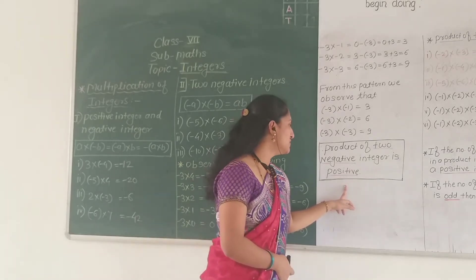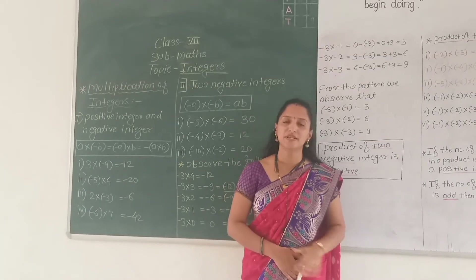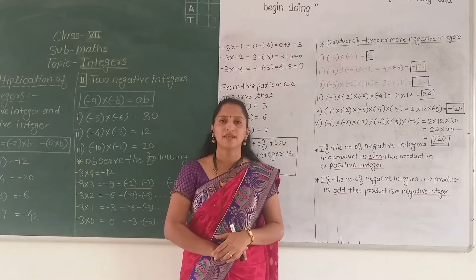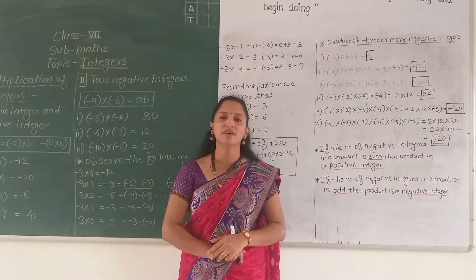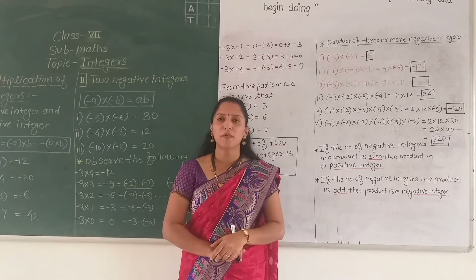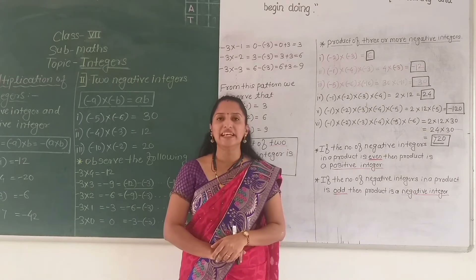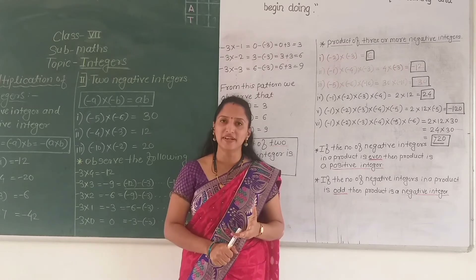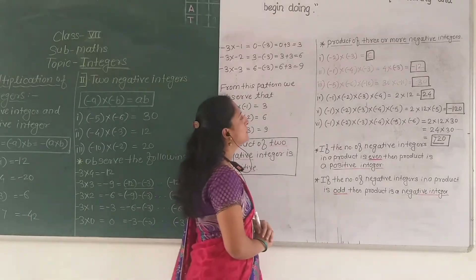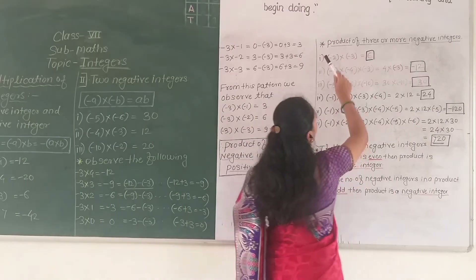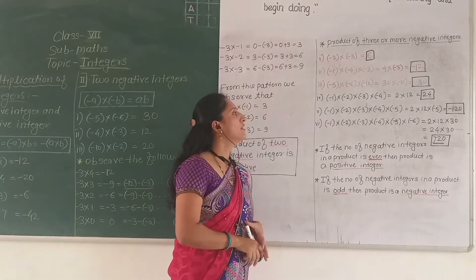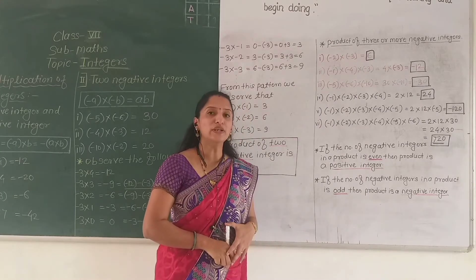So up to this, we have learnt: in multiplication, if one integer is positive and one is negative, then the product is negative — positive into negative is negative. And if both the integers are negative, their product is positive. Product of two negative integers is always positive. Now let us see what will happen with the product of more than two negative integers — product of three, four negative integers and so on.